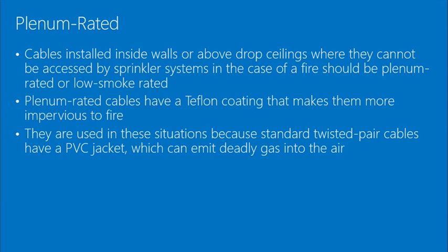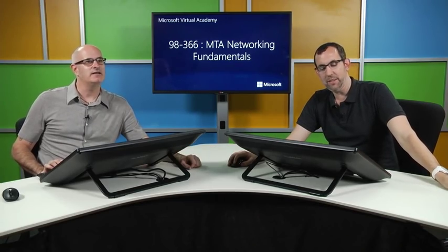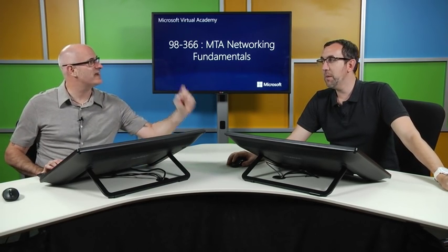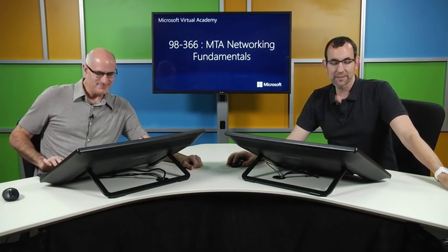Plenum-rated cable deals with fire safety — specifically how much smoke and toxic gas a cable releases if it catches fire. Standard twisted pair cables have a PVC jacket that can emit toxic gases when heated. Plenum-rated cable has a Teflon coating making it more impervious to fire, and is used for wiring in walls and spaces that can't be easily accessed or reached by sprinklers.